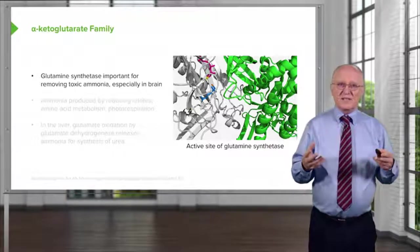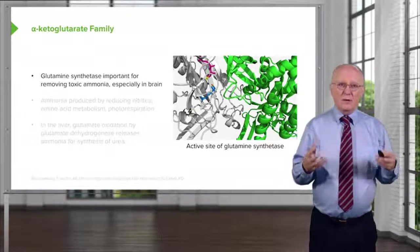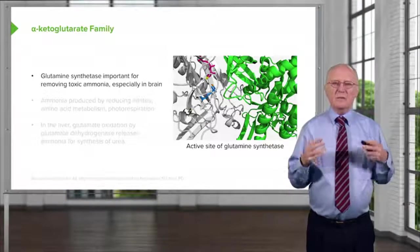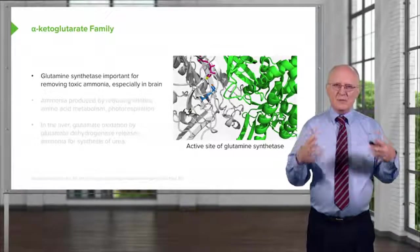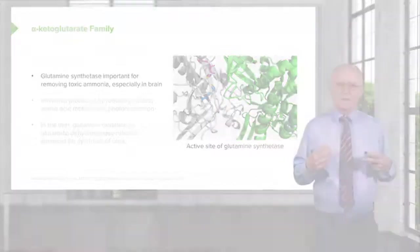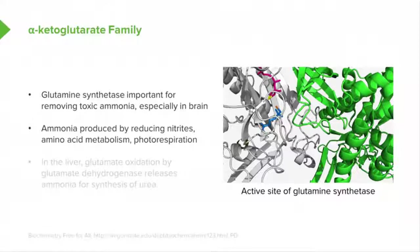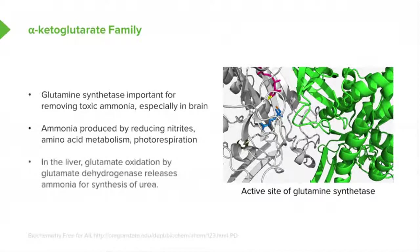Glutamine synthetase is important for removing ammonia, particularly in the brain, as we'll see in other lectures in this series. The accumulation of ammonia in the brain causes very important neurological problems. Ammonia is produced by reducing nitrites found in the diet, by amino acid metabolism, and also by photorespiration, which occurs in plants.